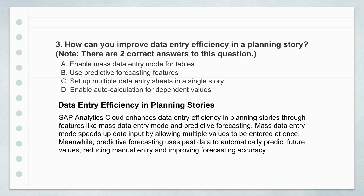Let's shift gears and talk about efficiency in planning. Question three: how can you improve data entry efficiency in a planning story? Two correct answers. Your options are A, enable mass data entry mode for tables; B, use predictive forecasting features; C, set up multiple data entry sheets in a single story; D, enable auto-calculation for dependent values. A and B both seem like they'd really cut down on manual work — and that's right. A and B are the correct answers.